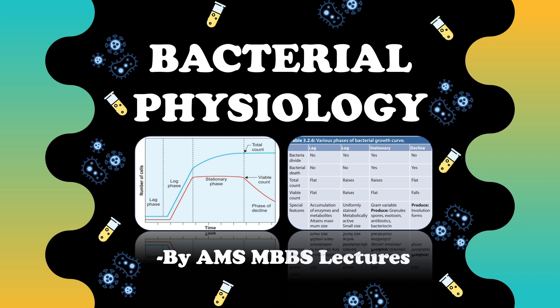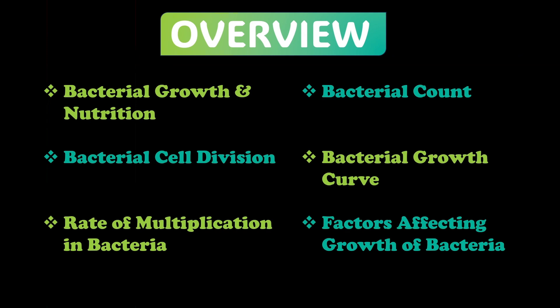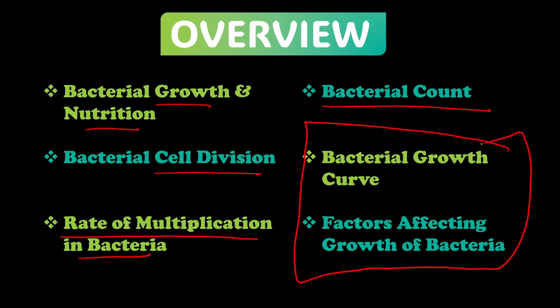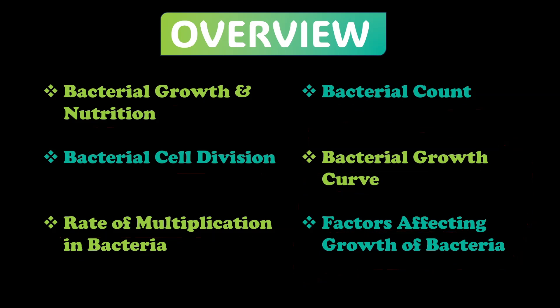The second half of the chapter is bacterial physiology. Under bacterial physiology, we have to study bacterial growth and nutrition, bacterial cell division, rate of multiplication, and bacterial count. The main topic of discussion under physiology is the bacterial growth curve and the factors affecting it. This video is an overview of general bacteriology — the morphology and physiology of bacteria.